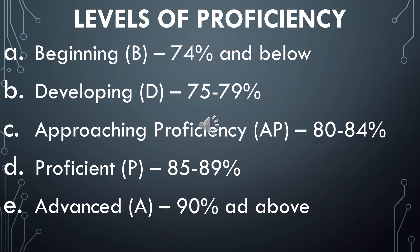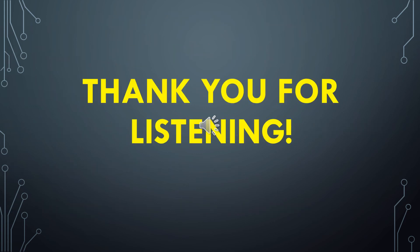We have the levels of proficiency with corresponding percentages: beginning, developing, approaching proficiency, proficient, and advanced — where advanced means receiving 90% and above. That's all for today, class. Thank you for listening.